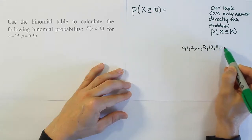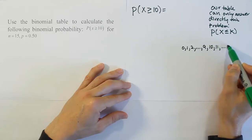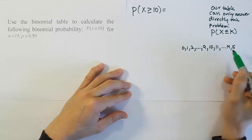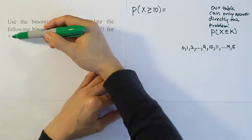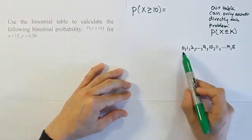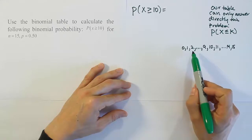10, 11, dot dot dot, up to 14, 15, right? So these are all the possibilities. If you have 15 trials, if n is 15 you can have no successes, 1 success, 2 successes...